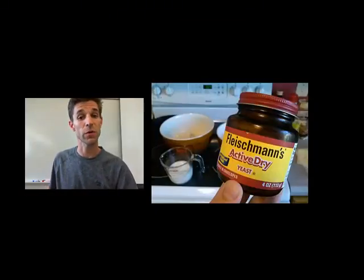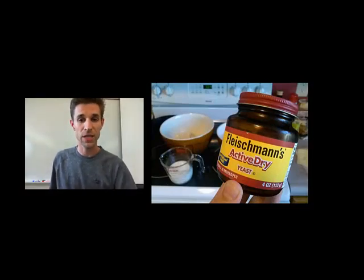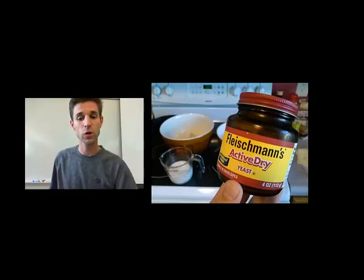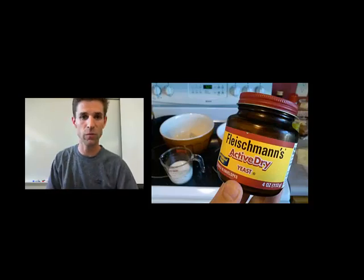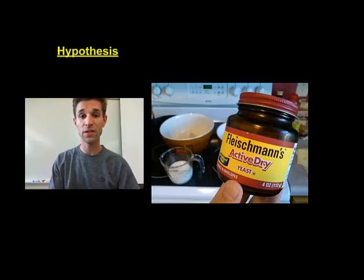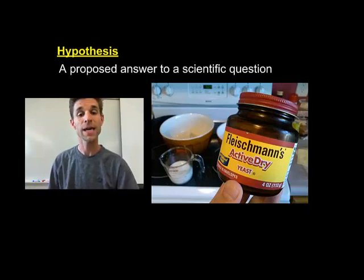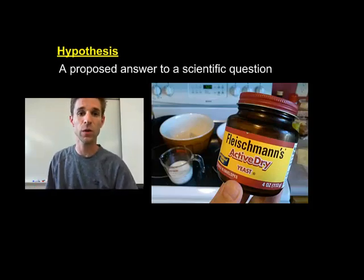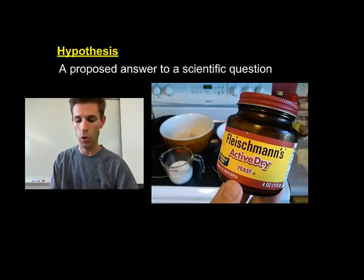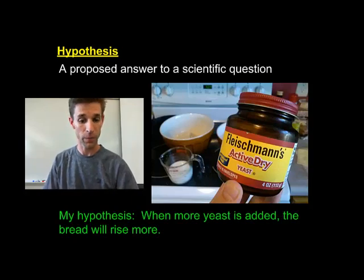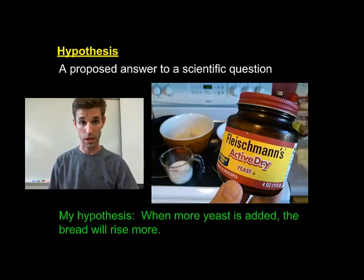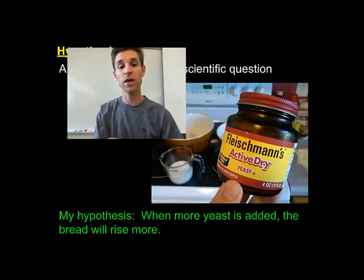Here's where the experiment begins. I know that yeast is an active ingredient in bread, and so I'm going to use that information to help formulate my hypothesis for my experiment. Remember, a hypothesis is nothing more than a proposed answer to the scientific question. In this case, our scientific question is: how can we make the bread rise more? My hypothesis is that when more yeast is added, the bread will rise more.